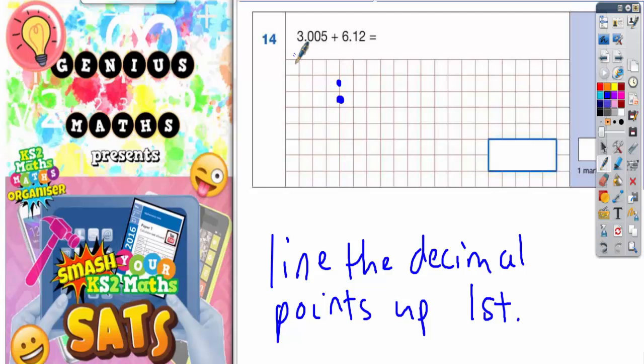On the top we'll put 3.005, and on the bottom we're going to put 6.12. Now because everything's lined up, you'll notice there's a gap here.